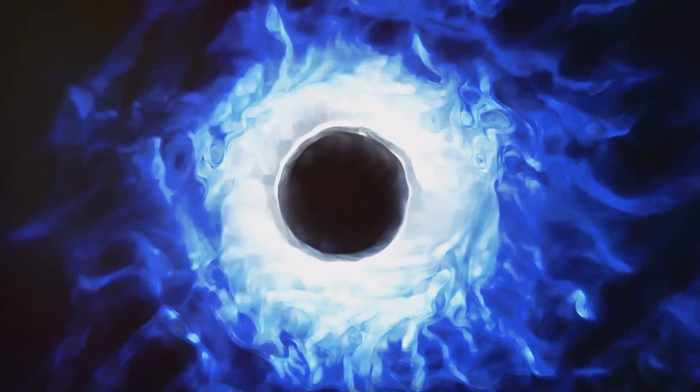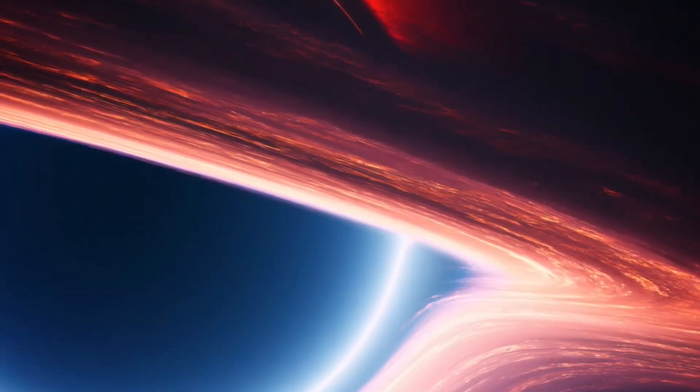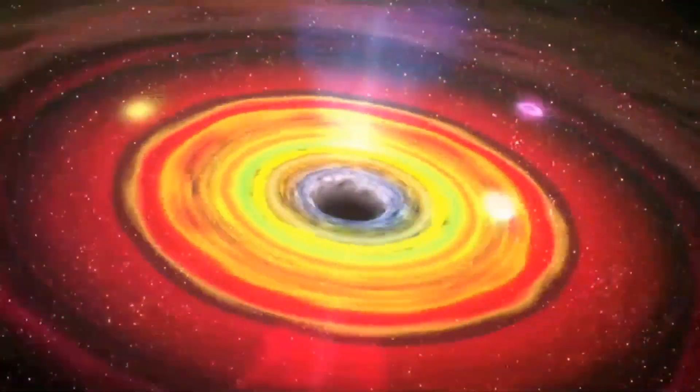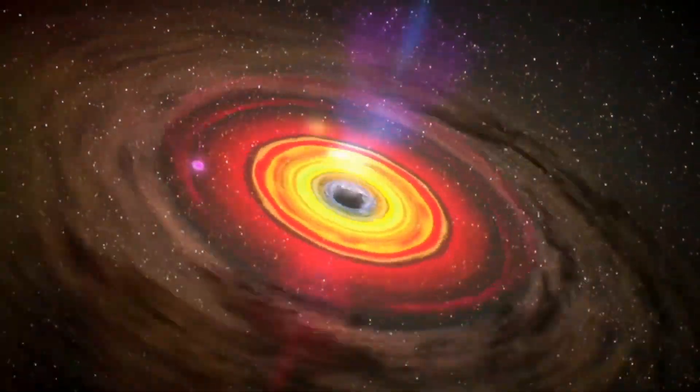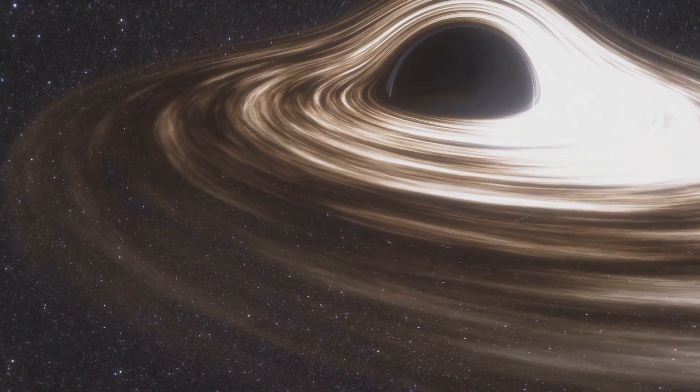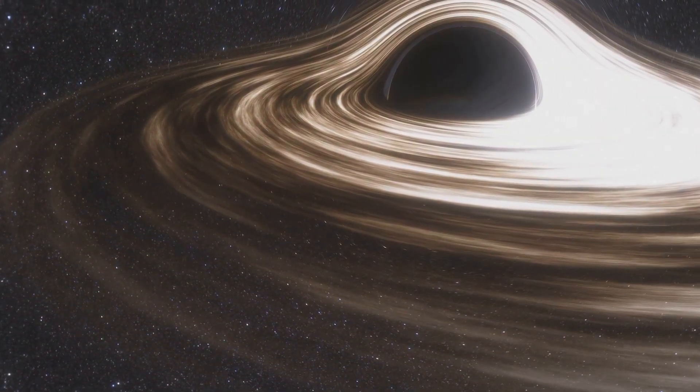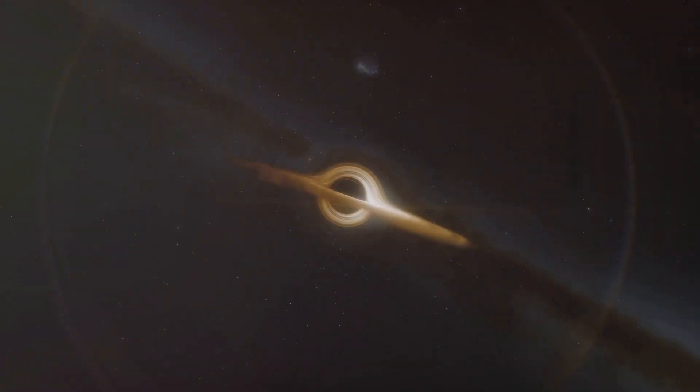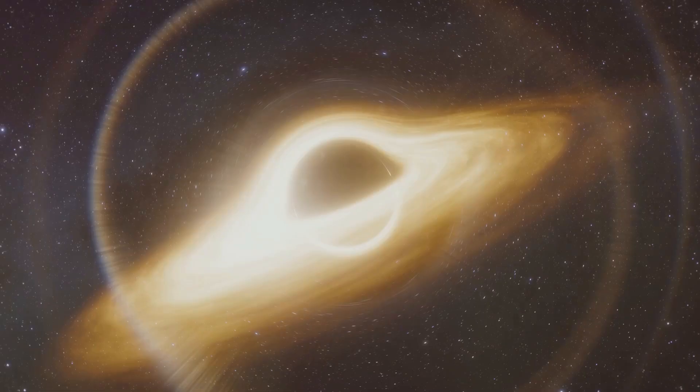It's often said that black holes are invisible, but this isn't entirely true. While it's correct that black holes themselves do not emit light, they can be some of the brightest objects in the universe. This apparent paradox is due to the material in the accretion disk surrounding the black hole. As matter is pulled toward a black hole, it accelerates and heats up, emitting intense radiation visible across great distances, sometimes outshining entire galaxies.